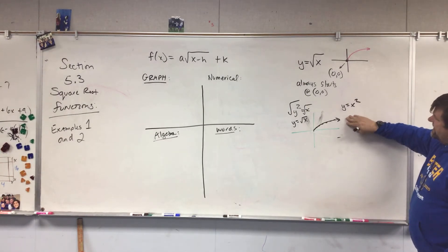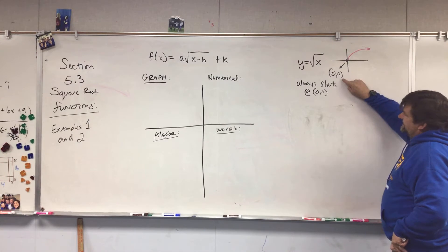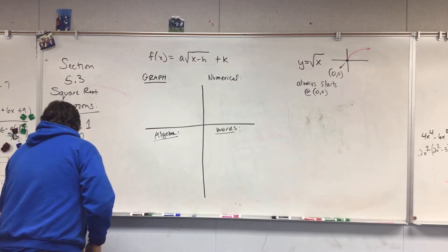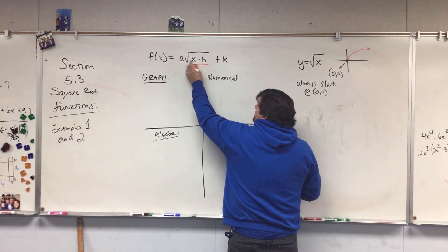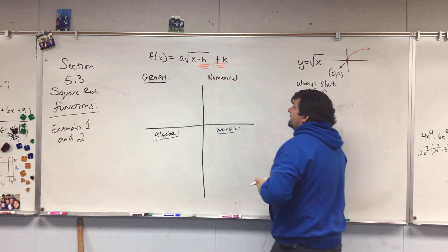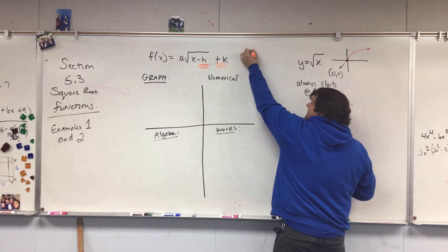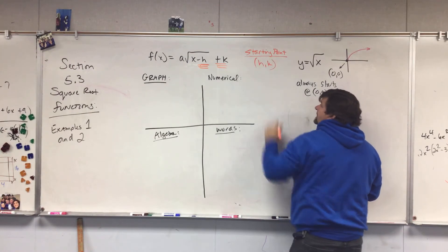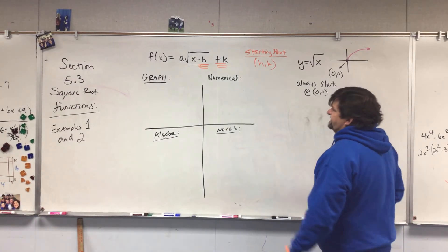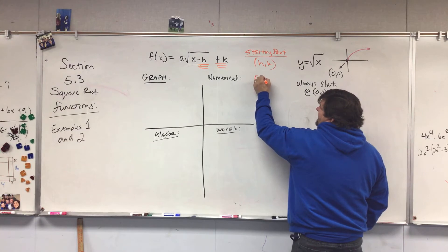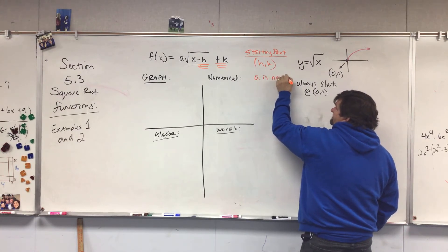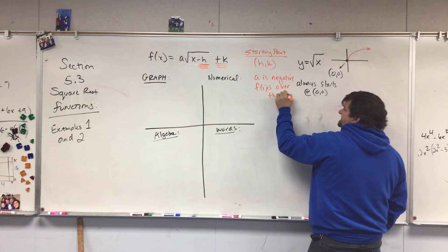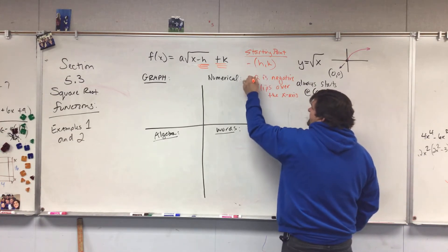What you really need to worry about is that the graph is shaped like this and always starts at zero and zero — because our friends h and k come back. The starting point is h and k, so we'll be able to move that piece. If a is positive it goes up; if a is negative it flips over the x-axis. These are the two main things we need to know.